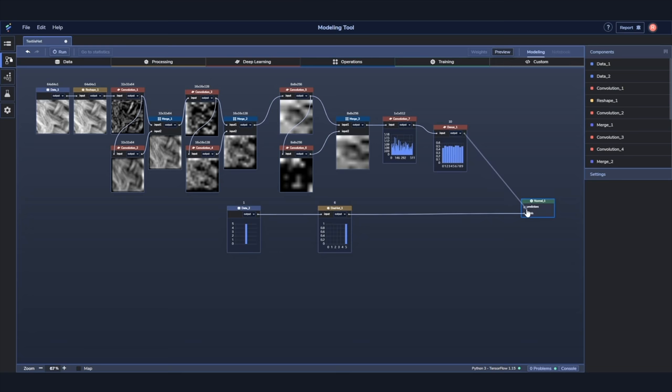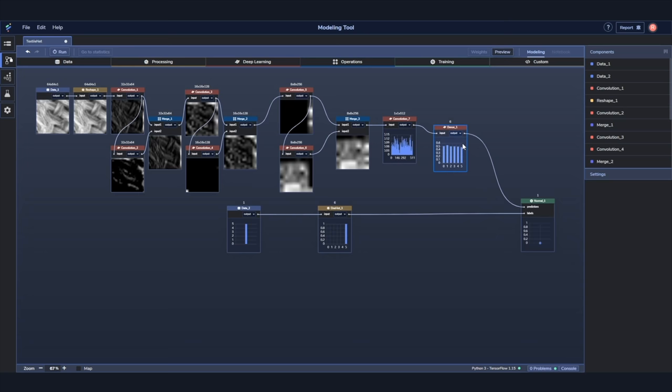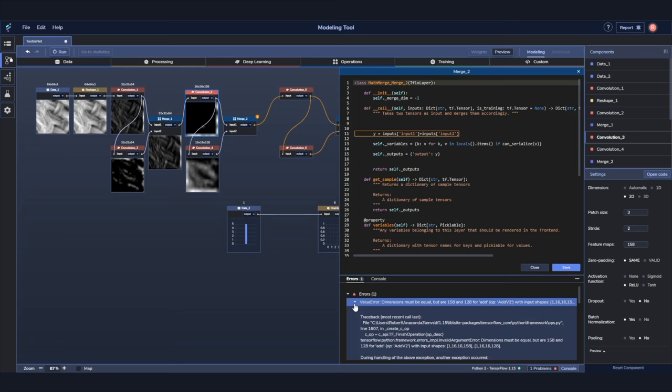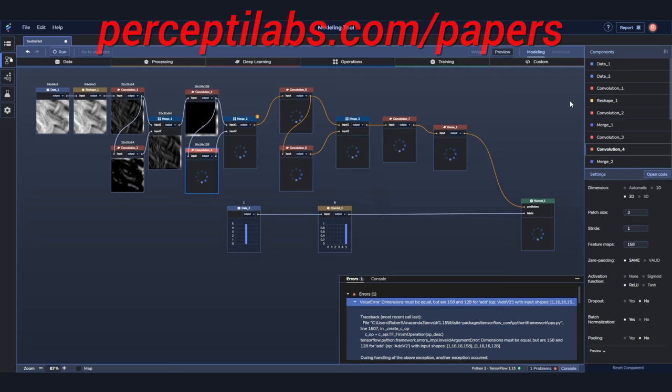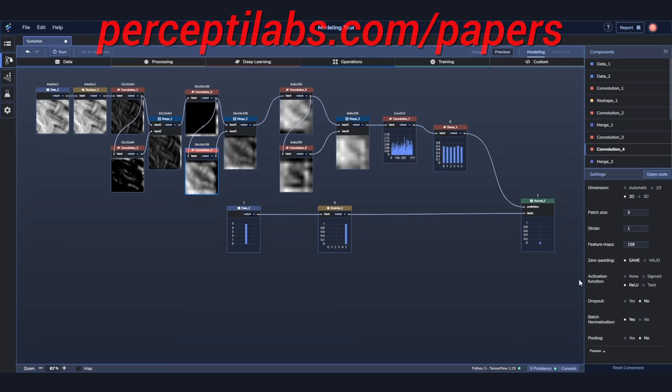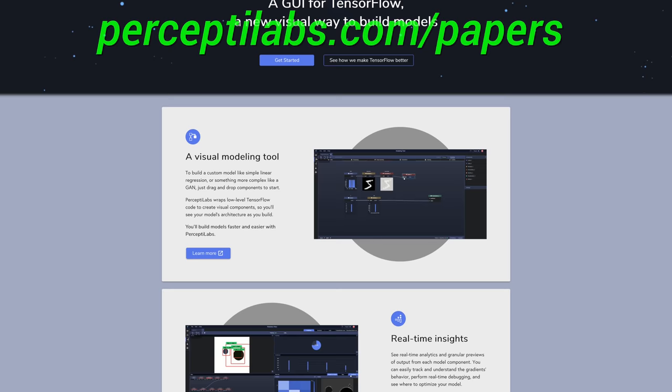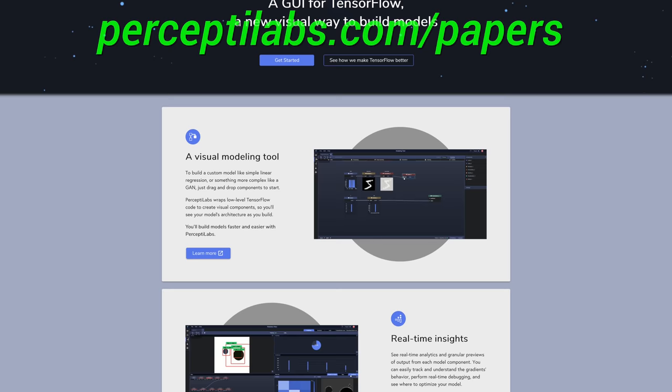PerceptiLabs is a visual API for TensorFlow carefully designed to make machine learning as intuitive as possible. This gives you a faster way to build out models with more transparency into how your model is architected, how it performs, and how to debug it. Look, it lets you toggle between the visual modeler and the code editor. It even generates visualizations for all the model variables and gives you recommendations both during modeling and training, and does all this automatically. I only wish I had a tool like this when I was working on my neural networks during my PhD years. Visit perceptilabs.com/papers to easily install the free local version of their system today. Our thanks to PerceptiLabs for their support and for helping us make better videos for you.